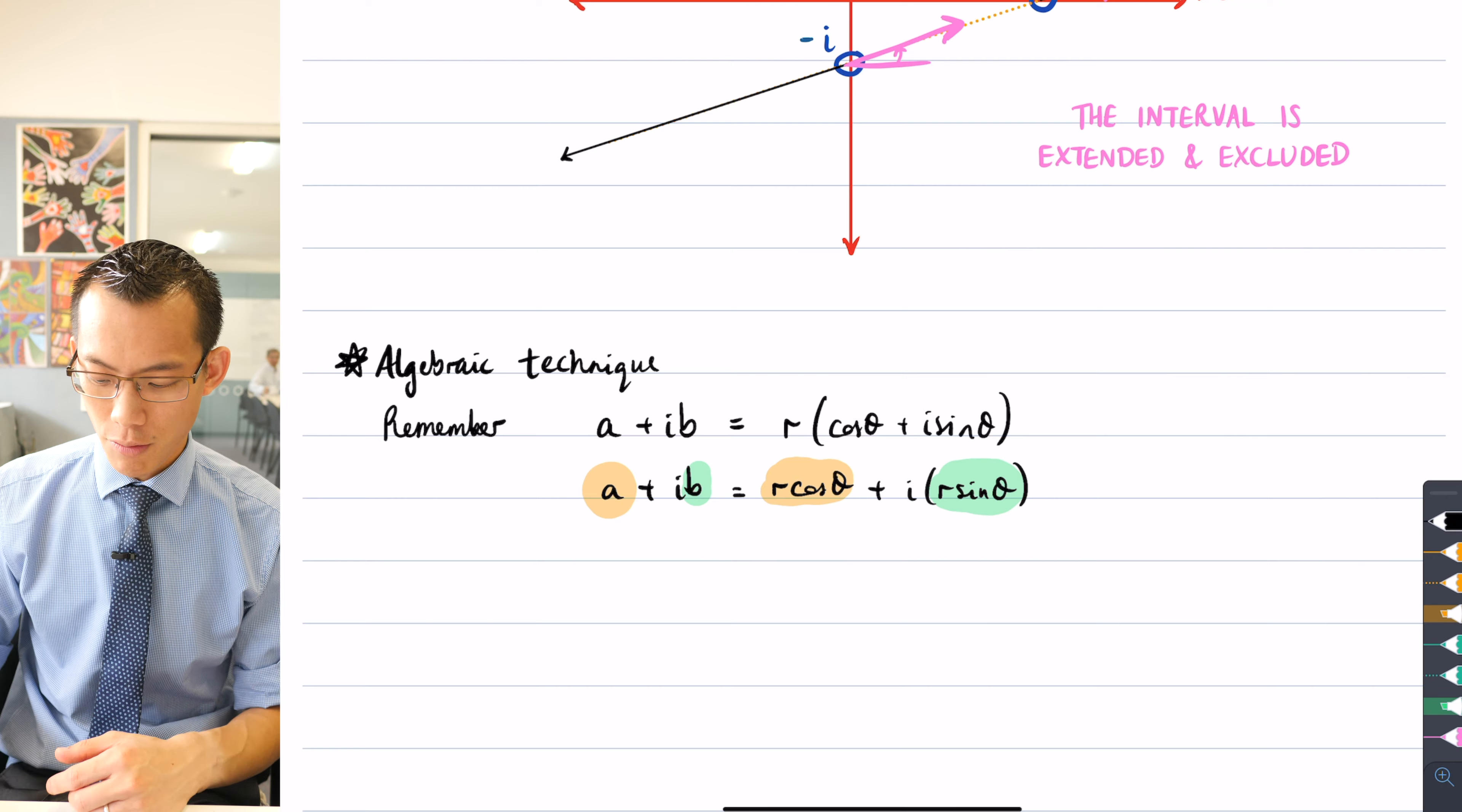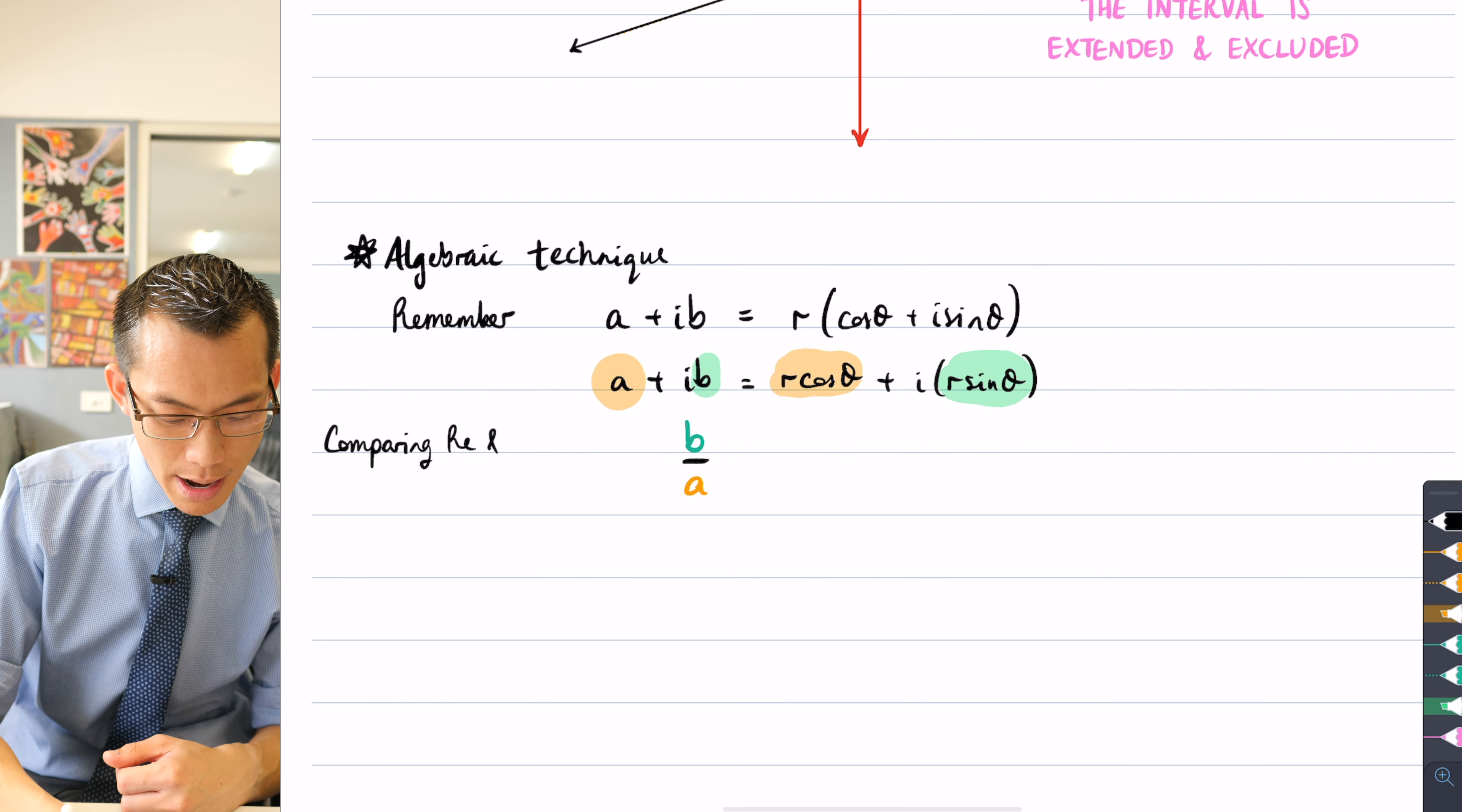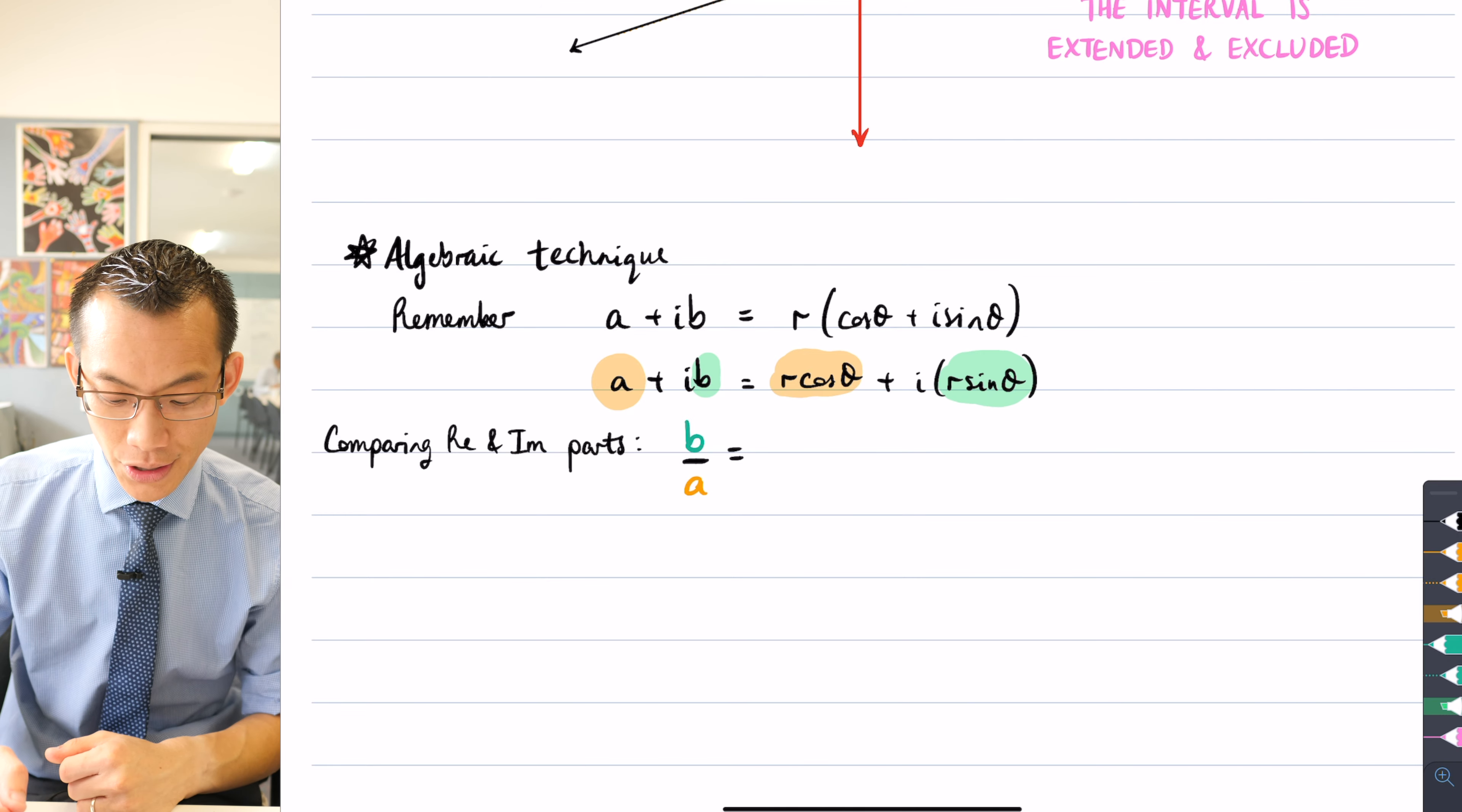So I'm going to say B over A. This is the imaginary part divided by the real parts. In fact, I should say that I'm comparing the real and imaginary parts. If I do a division of the imaginary component by the real component on the left-hand side, that is equivalent to doing a division of the imaginary component divided by the real component on the right-hand side. So I'm going to get R sin θ on the numerator and then I'm going to get R cos θ on the denominator.